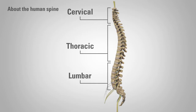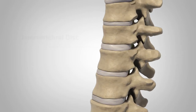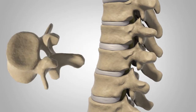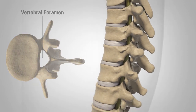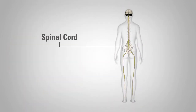Vertebrae are connected by several joints. The main joint is a flexible cushion between two vertebrae, called an intervertebral disc. Each vertebra has an opening through which the spinal cord travels. The spinal cord is a tubular bundle of nerves that begins at the base of the brain and ends at the top of the lumbar spine.